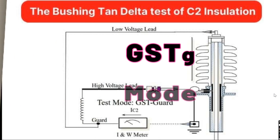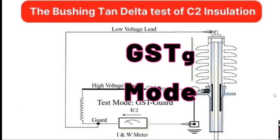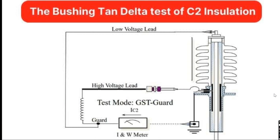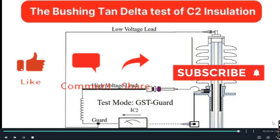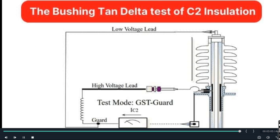For example, for tan delta testing of a transformer bushing to carry out a test of C2 insulation, GSTG mode of testing is used, where the HP terminal of the bushing is connected to the guard terminal of the test kit. Hence, to get accurate test results, the correct mode of testing must be chosen.